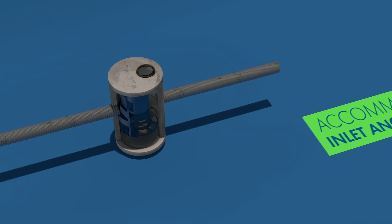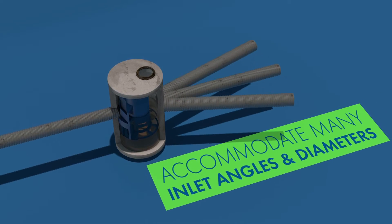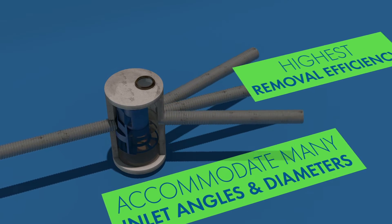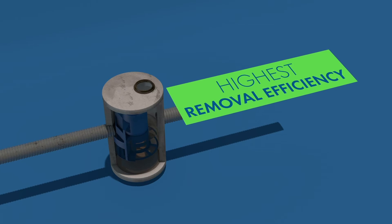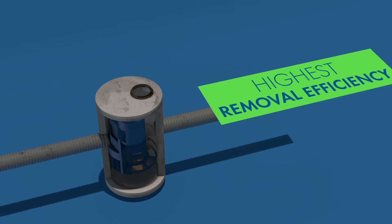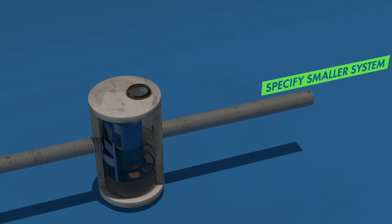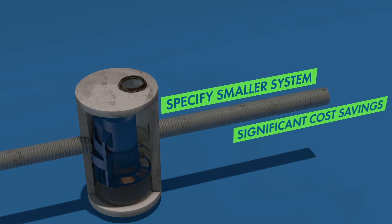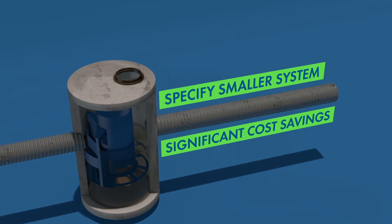The Cascade Separator can accommodate a large range of inlet pipe angles and diameters. The Cascade Separator provides the highest removal efficiency of any Contech HDS system. By using a Cascade Separator, you may be able to specify a smaller size system compared with other HDS systems, resulting in significant cost savings.